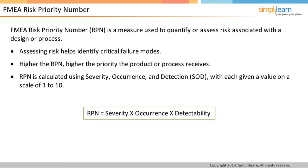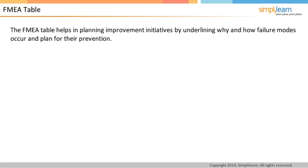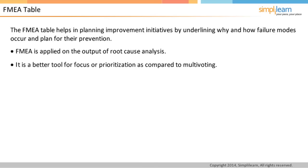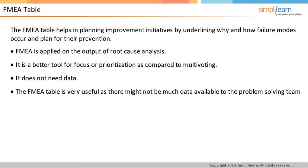The FMEA table helps plan improvement initiatives by underlining why and how failure modes occur and helps organizations plan for their prevention. FMEA is typically applied on the output of root cause analysis and is a better tool for focus or prioritization compared to multivoting. One important aspect of FMEA is that it does not need data — experts in a particular area can form the FMEA table without looking at data from any source, making it very useful in functions such as human resources.